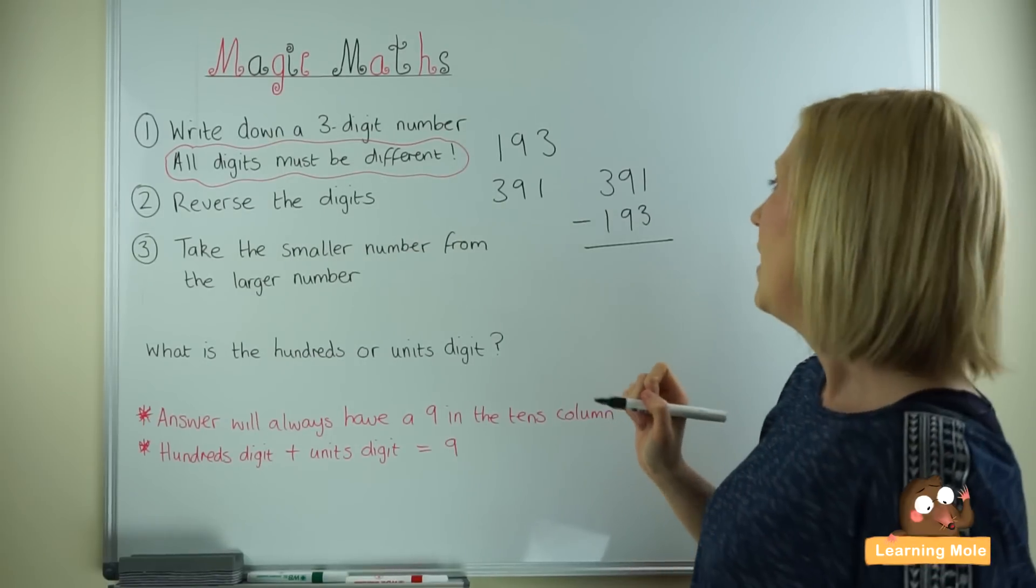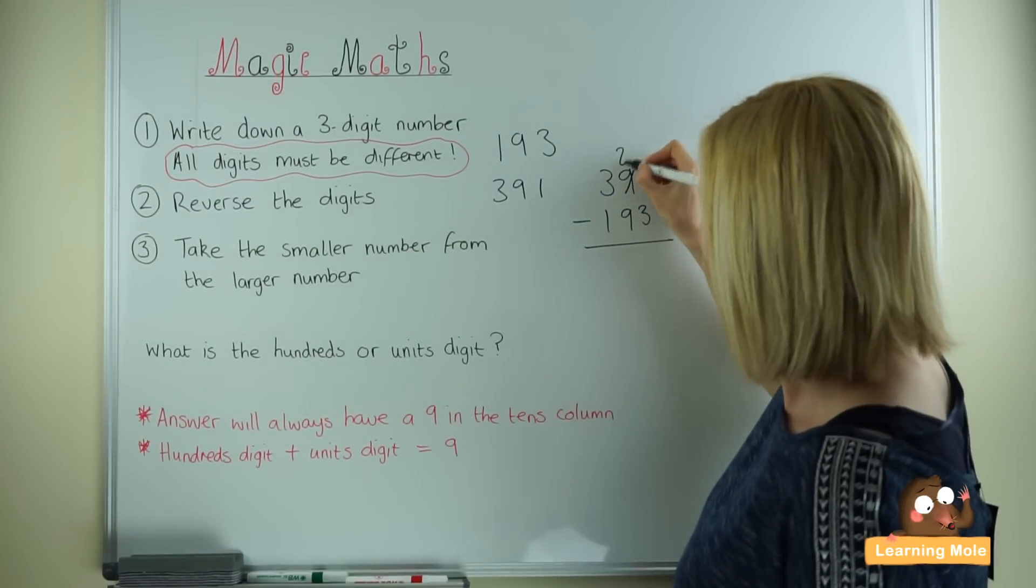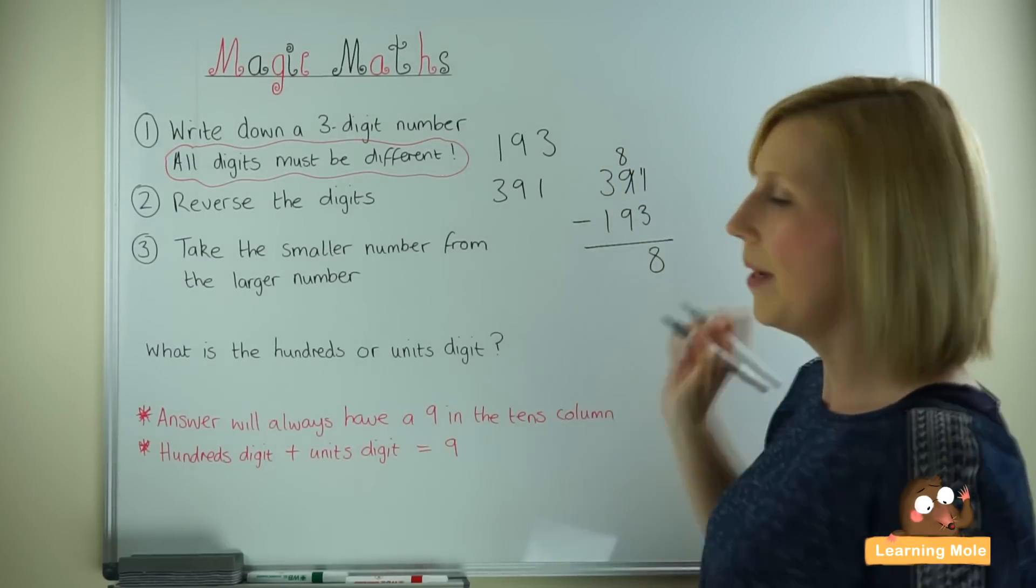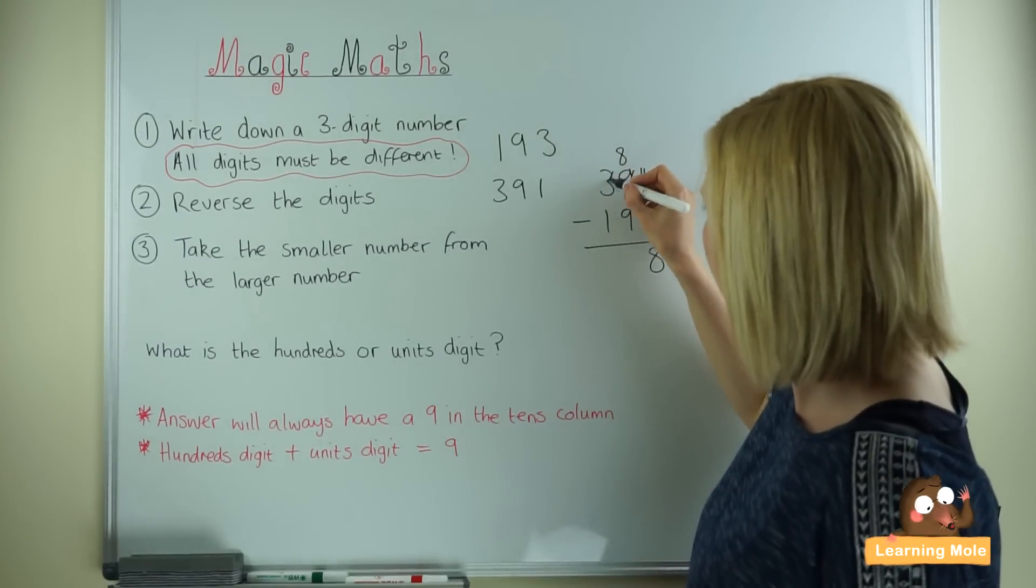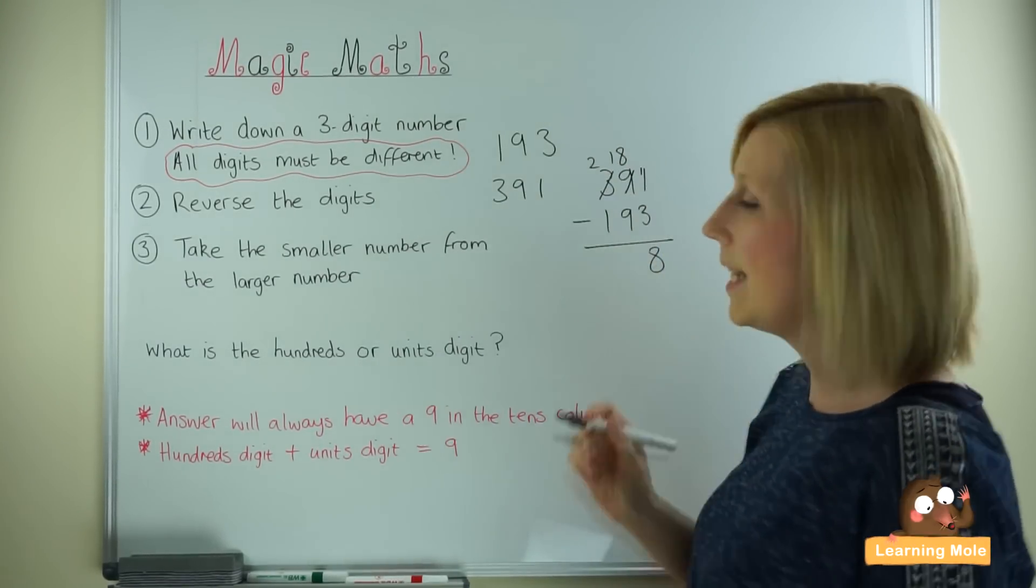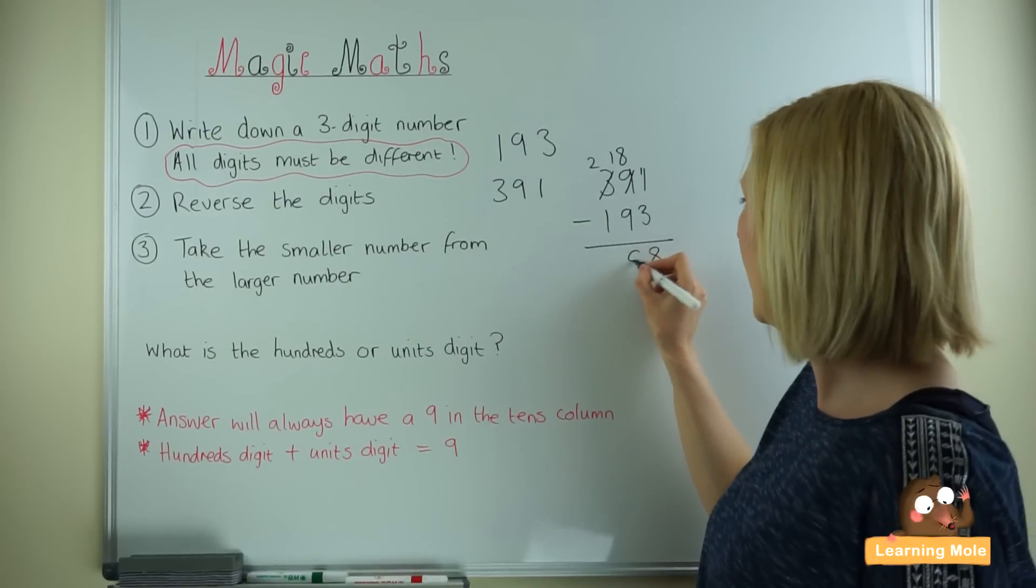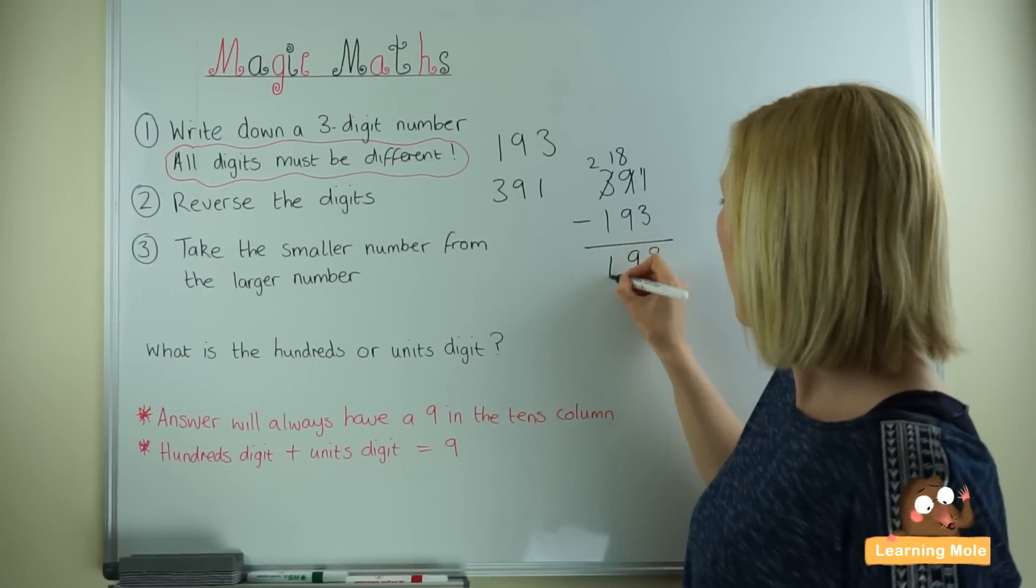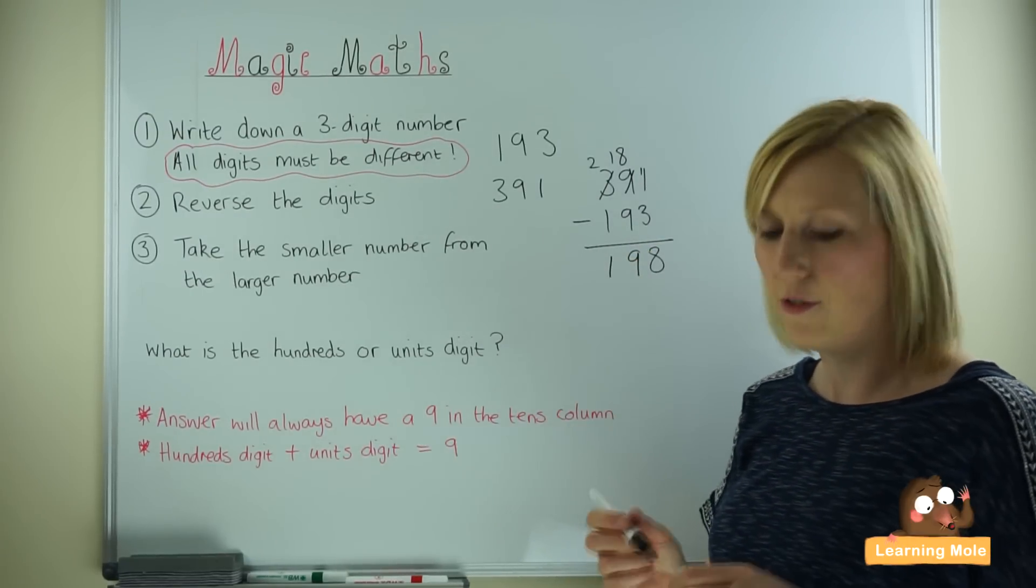1 take away 3 we can't do, so we have to borrow. 11 take away 3 gives us 8. 8 take away 9 we can't do, so we have to borrow. 18 take away 9 is 9. And 2 take away 1 is 1. So our answer is 198.